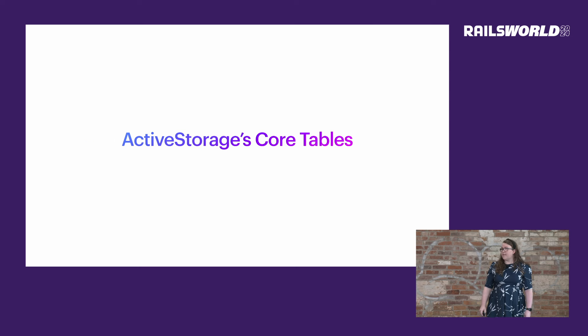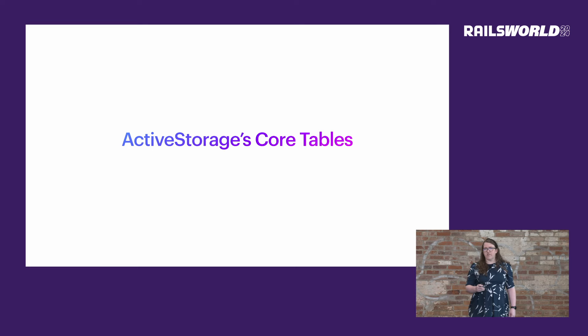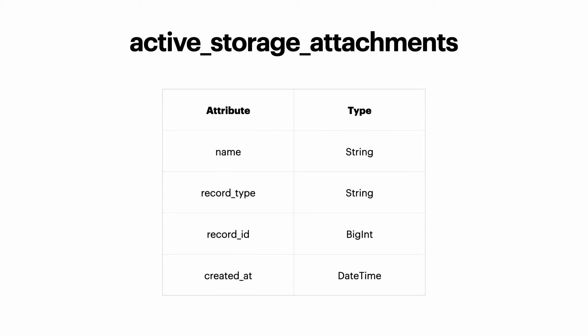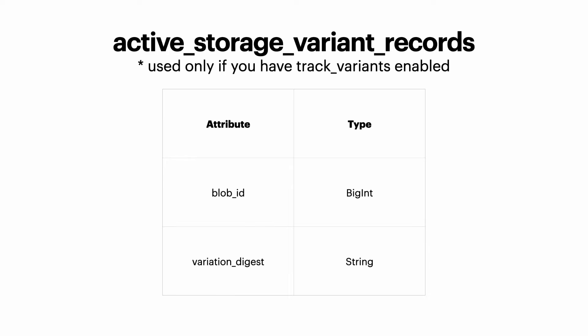Behind the scenes, Active Storage relies on three main tables: Active Storage blobs, Active Storage attachments, and Active Storage variant records. Blobs are the key representation of files we upload — each blob stores essential information like content type, byte size, and the file's location. Attachments act as the bridge between your Active Record model and the blobs. Variant records track variations of processed images, such as thumbnails or resized dimensions, and can be stored in the table assuming tracking is enabled, allowing for easier reference and management of different file versions.